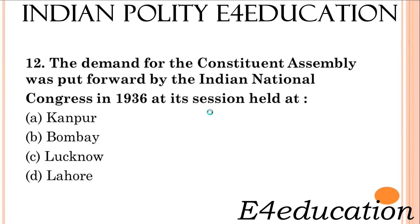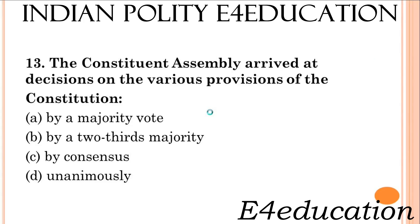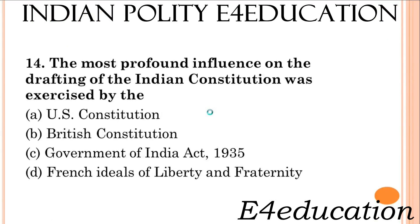The demand for the Constituent Assembly was put forward by the Indian National Congress in 1936 at its session held at Lucknow. The Constituent Assembly arrived at decisions on the various provisions of the constitution by consensus. The most profound influence on the drafting of the Indian Constitution was exercised by the Government of India Act 1935.